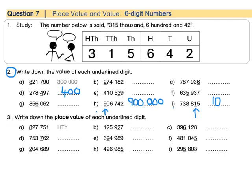Number 3. Write down the place value of each underlined digit. Now place value tells us which column the number is in. A. This 8 is in our hundred thousands column. HTh for hundred thousands.